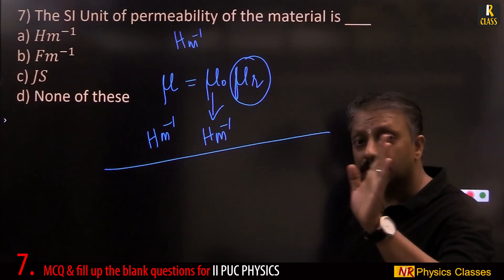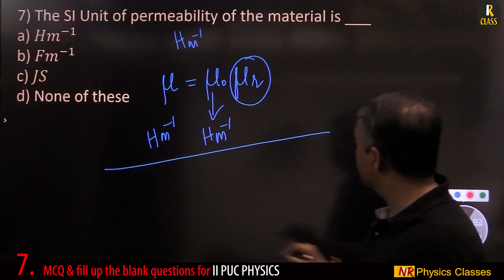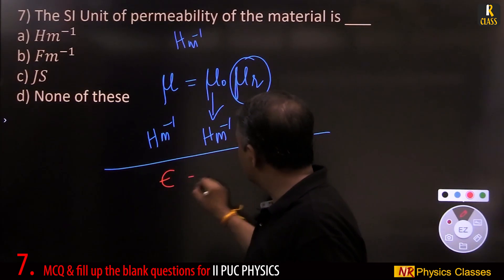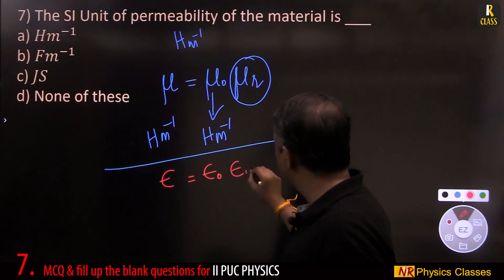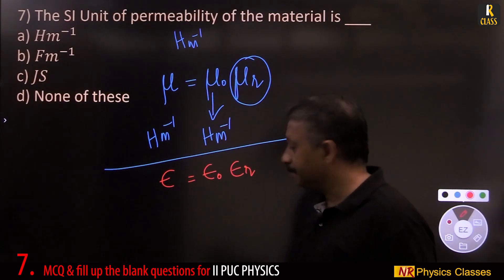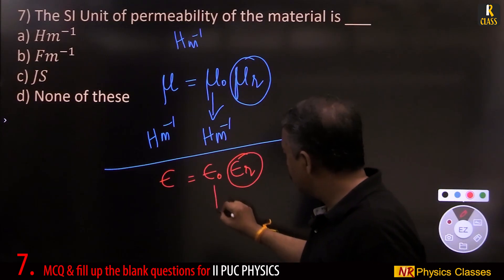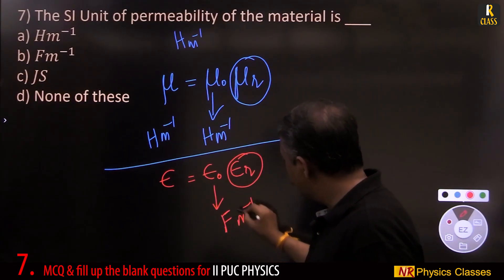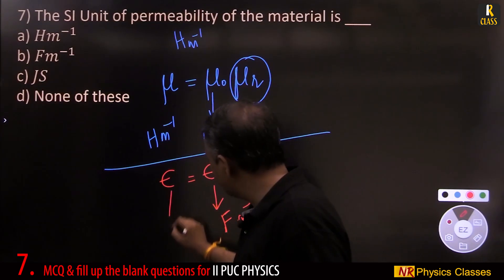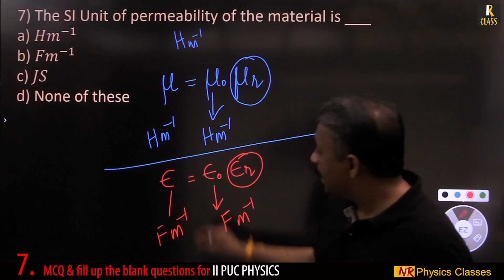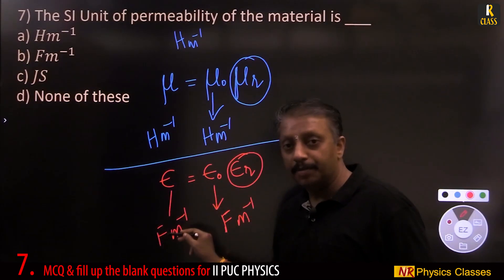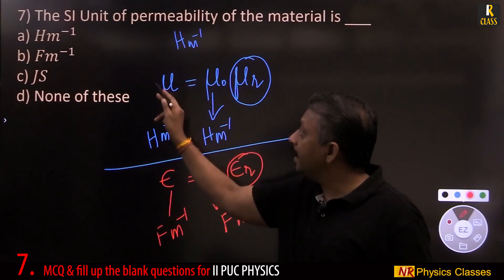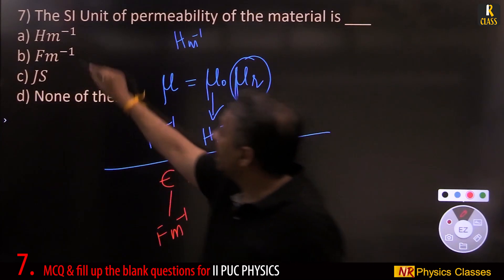Similarly, in the case of electrostatics, epsilon equal to epsilon naught into epsilon r. Permittivity. This is dimensionless. This is farad per meter. Therefore, this should be farad per meter. Permittivity is farad per meter. Permeability is Henry per meter.